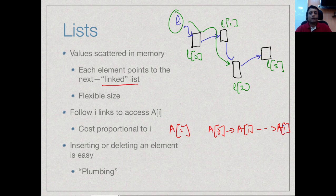Therefore the further down in a list I need to go the longer it takes me. So accessing a[i] is proportional to i, so in general if I have to access the ith element of a list it's a linear time operation.